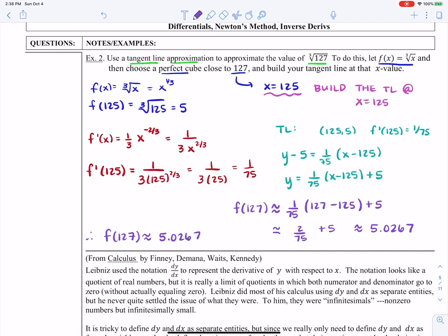So our approximated value of the cube root of 127 using this tangent line is 5.0267. And I can grab my calculator and see how close did I get? Was I really close to the real value of the cube root of 127? And you find out, yeah, I actually am pretty close.